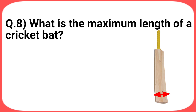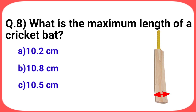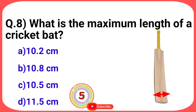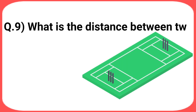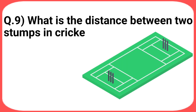Next question: what is the maximum length of a cricket bat? Your options are: a) 10.2 cm, b) 10.8 cm, c) 10.5 cm, d) 11.5 cm. The answer is option b: 10.8 cm.